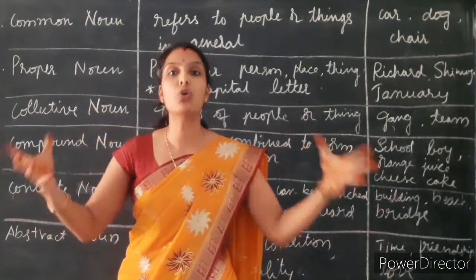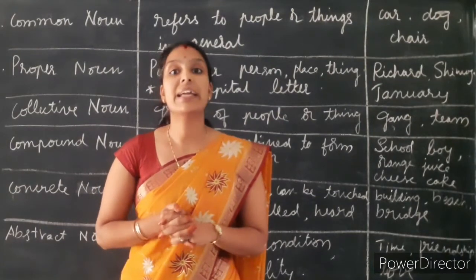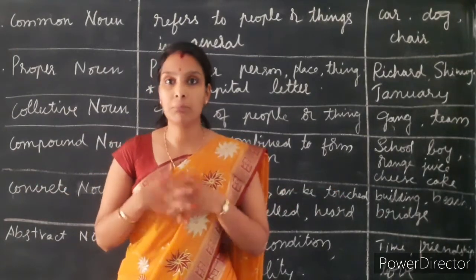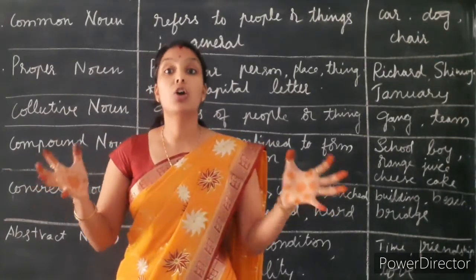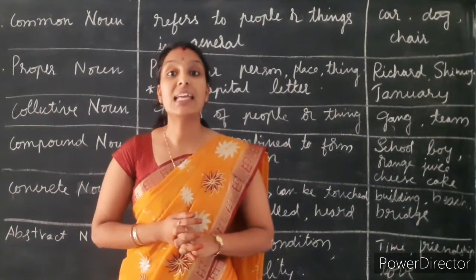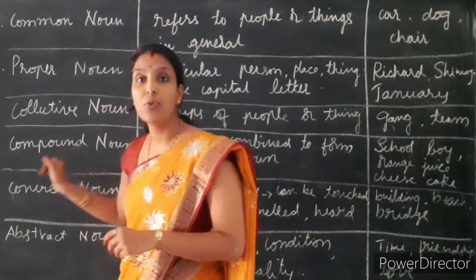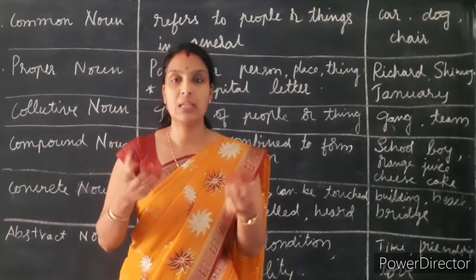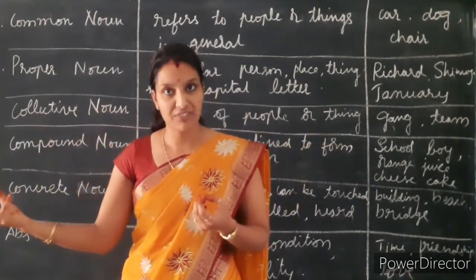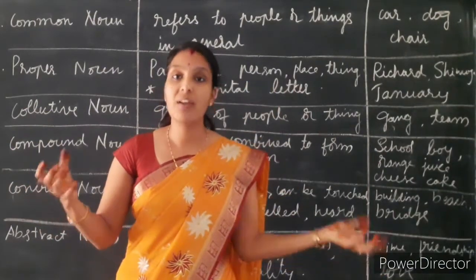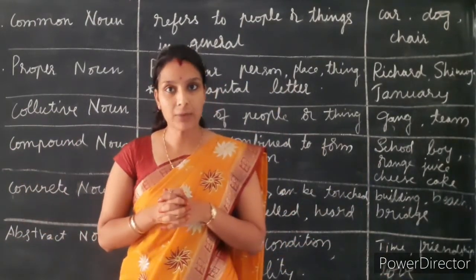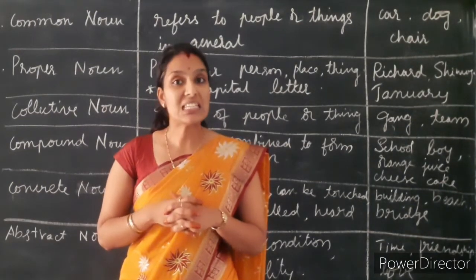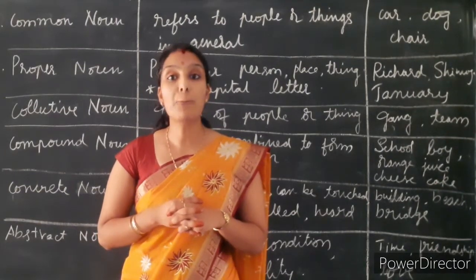Collective noun — gang, team, an army: these are all groups of people, so these are called collective noun. Compound noun — when two different nouns are combined together to give a new noun. Cheese and cake: cheese is a different noun and cake is also a noun, and when these two combine or compound they give a new noun called cheesecake. So these kinds of nouns are called compound noun.